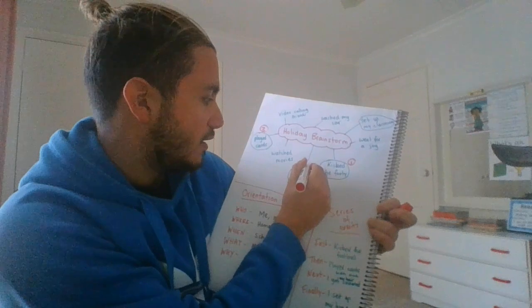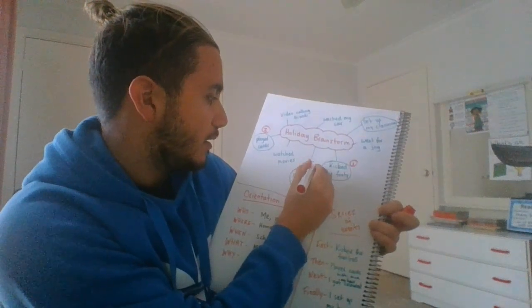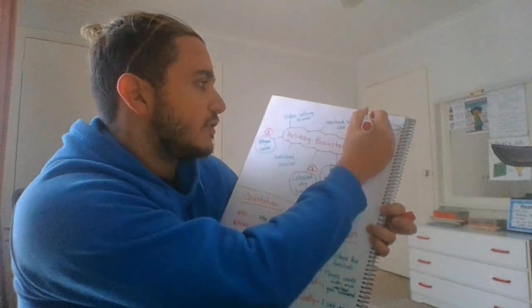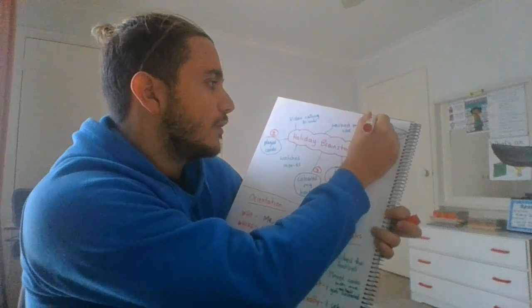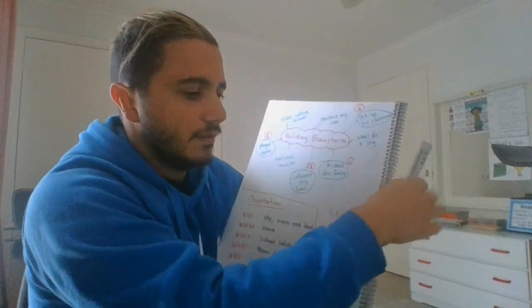And then I got my hair colored, so color my hair was number three, and then set up my classroom was number four. Okay, so let's head back over to the whiteboard now. I'm going to show you how I start writing my series of events.